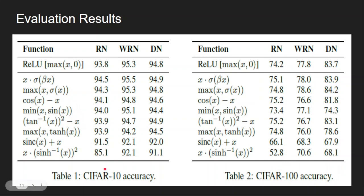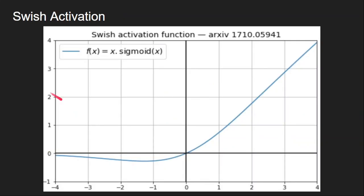For the initial screening, the first activation function performed better than all others. They took this function and conducted experiments on a variety of tasks — and this function is the Swish activation function. They named it Swish. In its simplest form it is just x times sigmoid(x). It looks like ReLU on the positive side, and on the negative side it has some negative region.